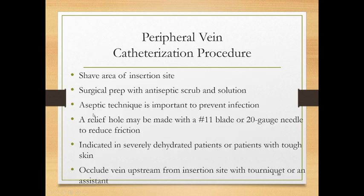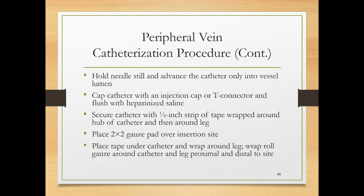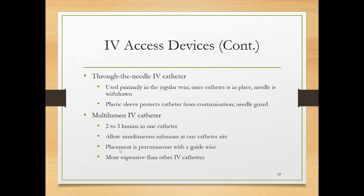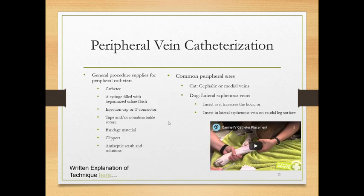We never use a relief hole — that's a nick in the skin to ease access to the vessel, and it's something we would not actually do. With cats, we use the cephalic or medial saphenous vein; with dogs, either the lateral saphenous or cephalic veins — front leg or rear leg respectively.